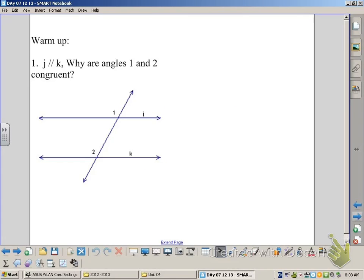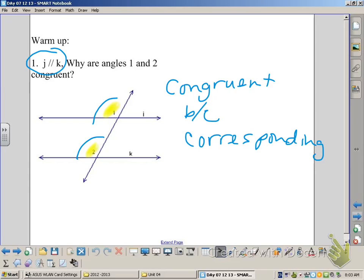Now for today's lesson, we're wondering why angle 1 and angle 2 are congruent. If we think back to what we did in unit 2, we know they're congruent because they're corresponding angles, and those are always congruent when we have parallel lines. That's going to be important for today's lesson.